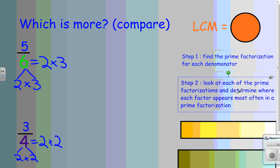So, I look at the factor two. There's one in the number six, and there's two in the number four. It appears most often in the four, so I will circle those two twos.